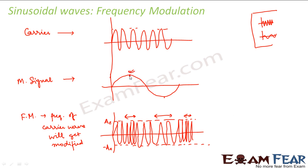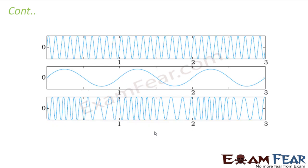Whenever the message signal is at a higher amplitude, the frequency changes to be higher. When the message signal is at a lower amplitude, the frequency changes to be lower. So the frequency of the carrier wave is changing as per the message signal — this is frequency modulation. Whenever there is a high, the waves come close together; whenever there is a low, the waves are far apart.